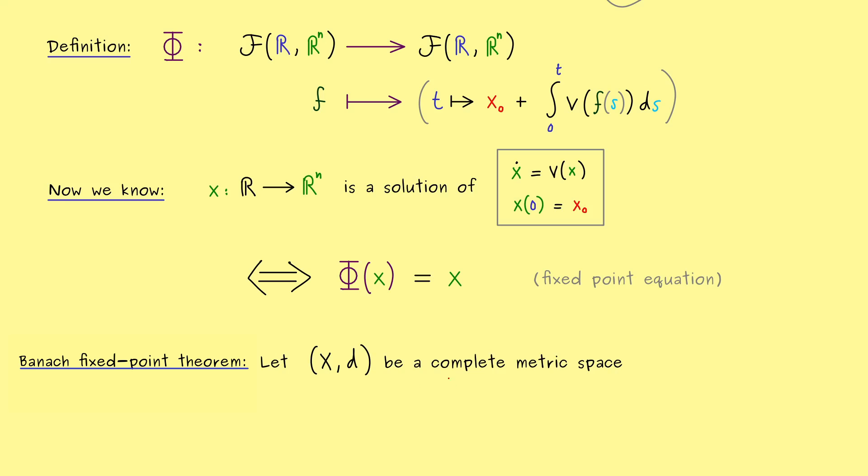More precisely, we need a so-called complete metric space. So you see, you need to know what a metric space is, but this is not so hard, it's simply a set X together with a distance function. Hence, we can measure the distance between two points in the set X and therefore also notions like limits, convergence and so on make sense. In conclusion, complete just means that all Cauchy sequences in X,d converge.